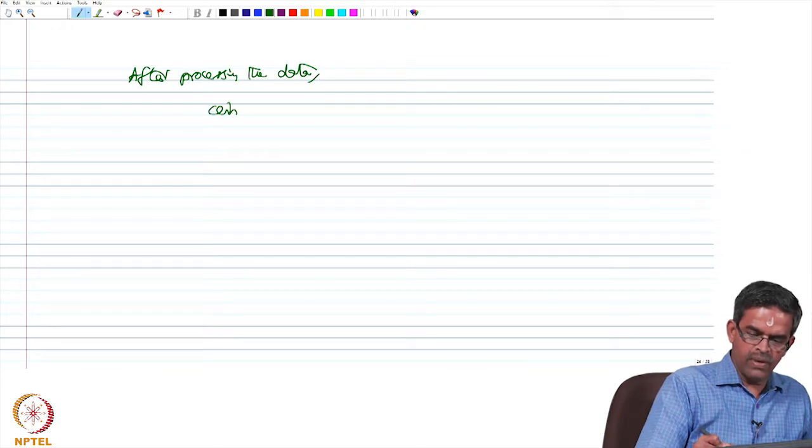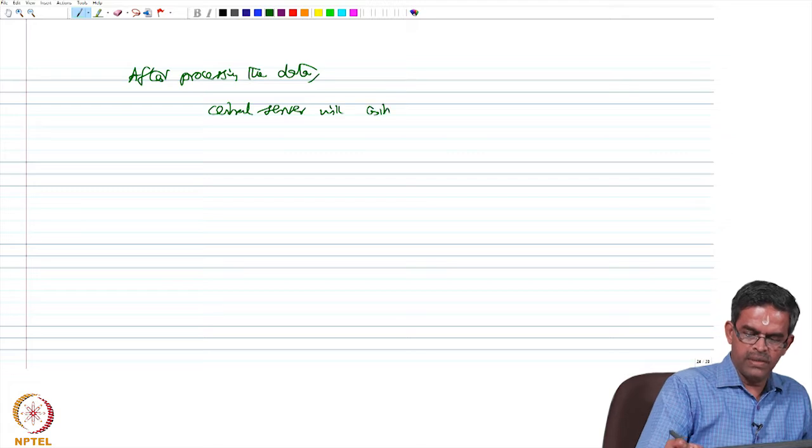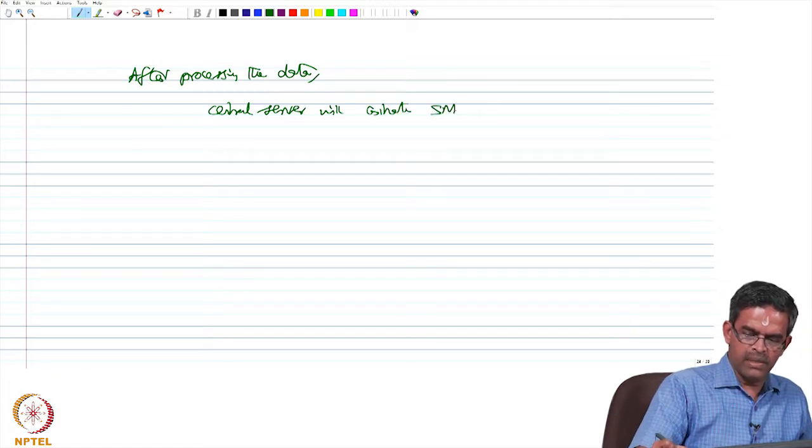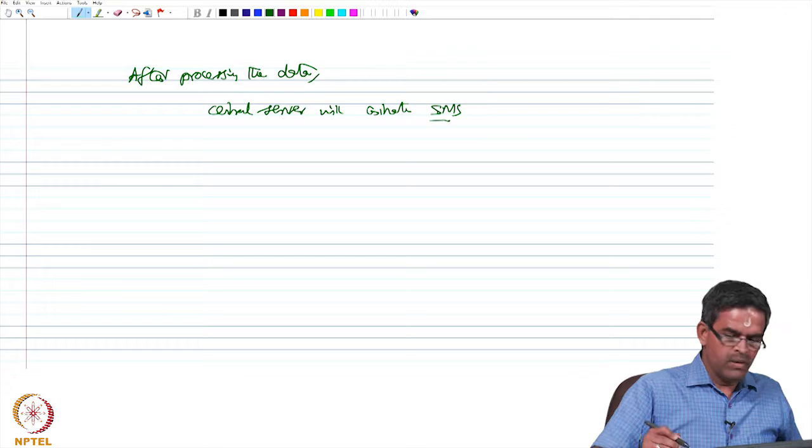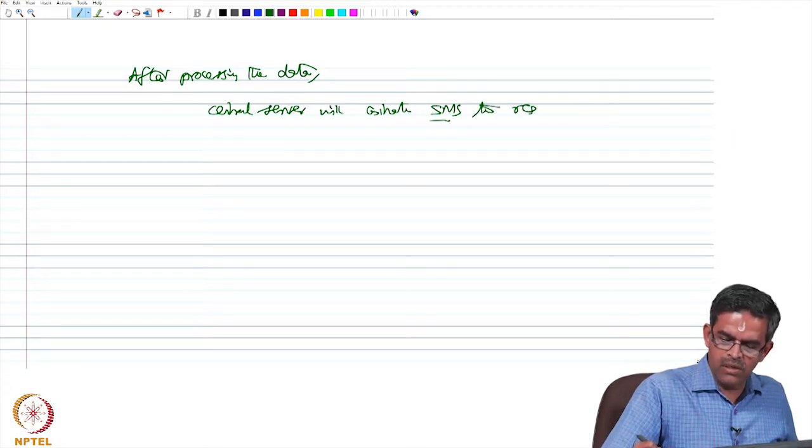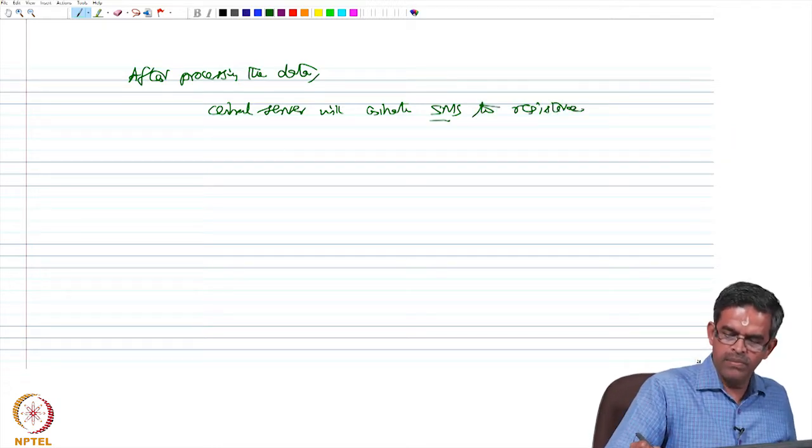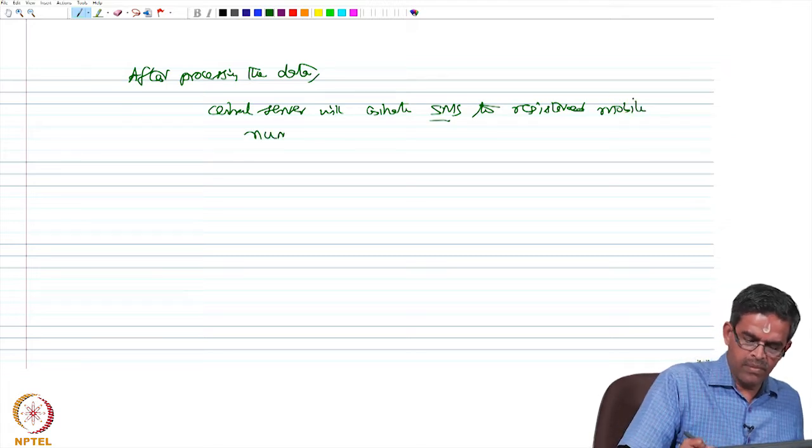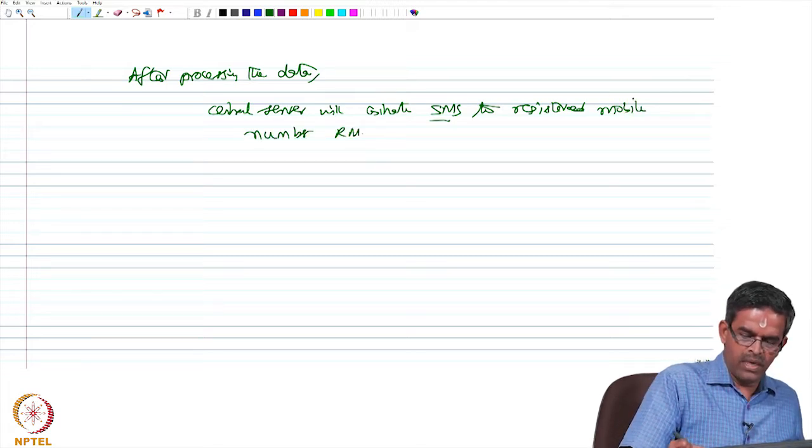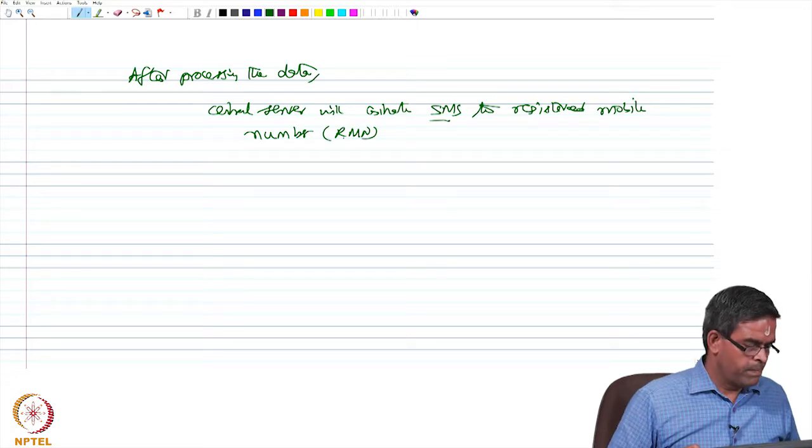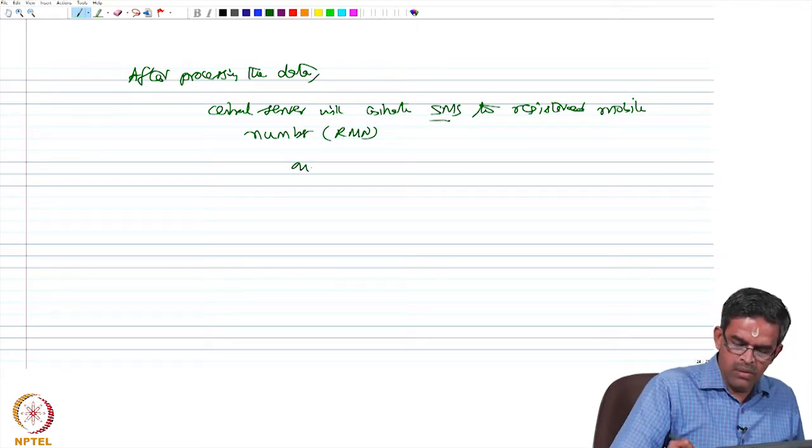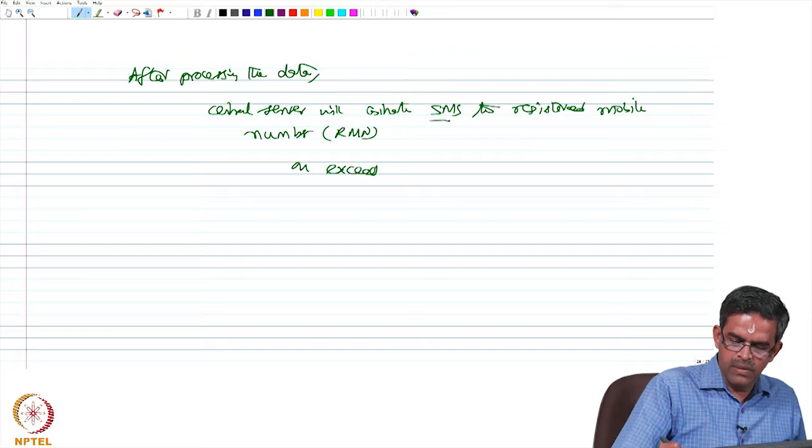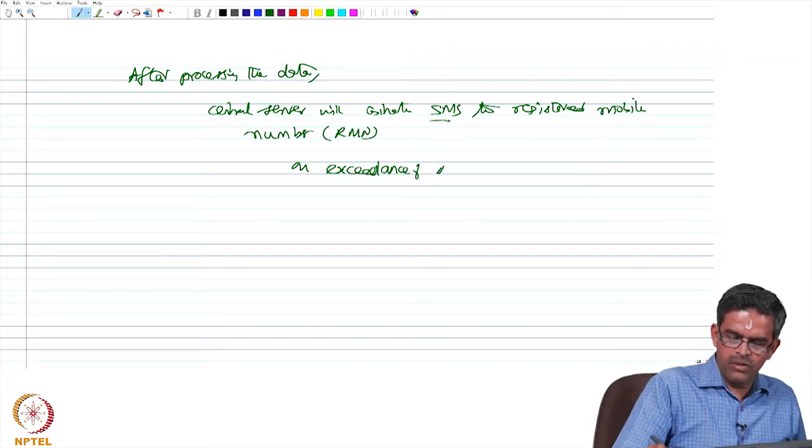The central server will initiate an SMS to the registered mobile number, which is RMN, on exceedance of the threshold value.